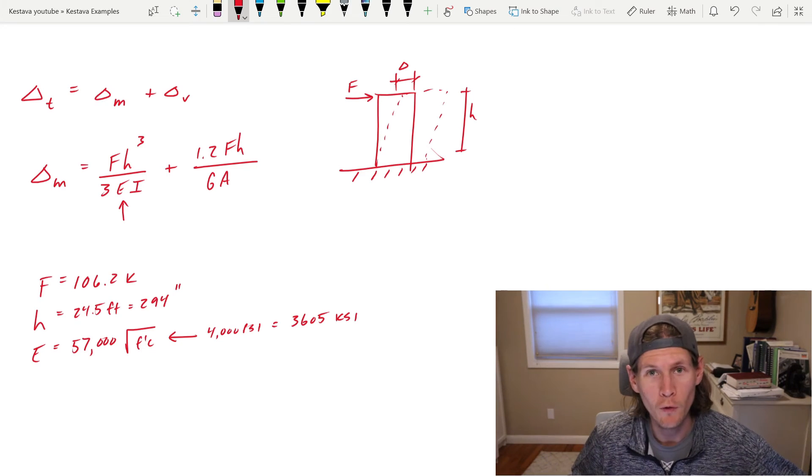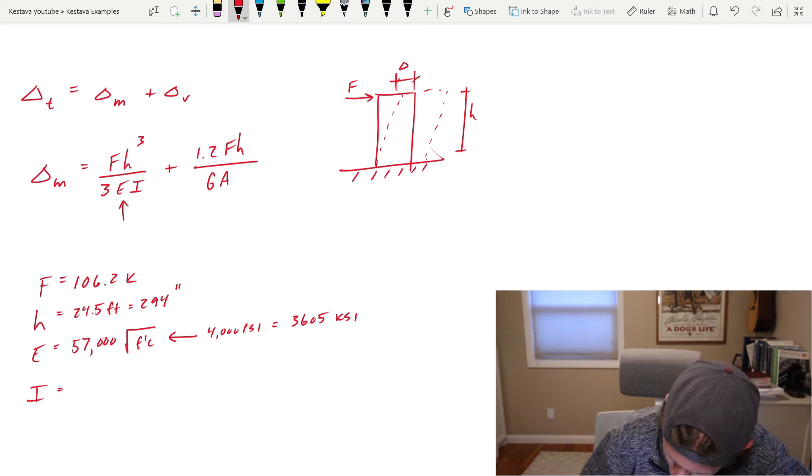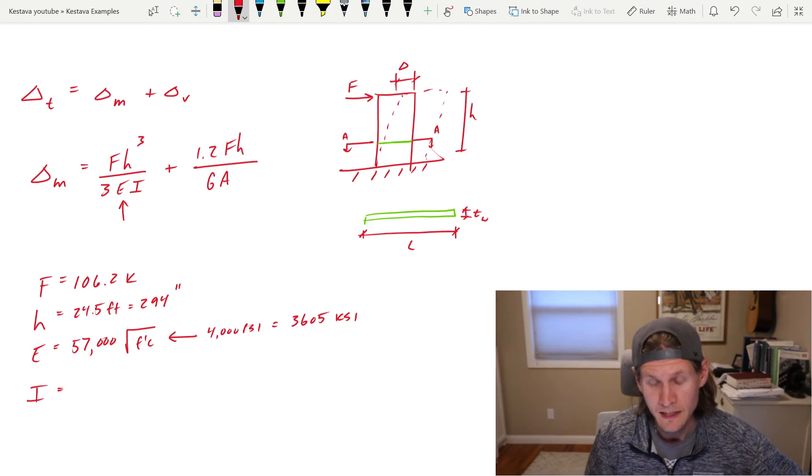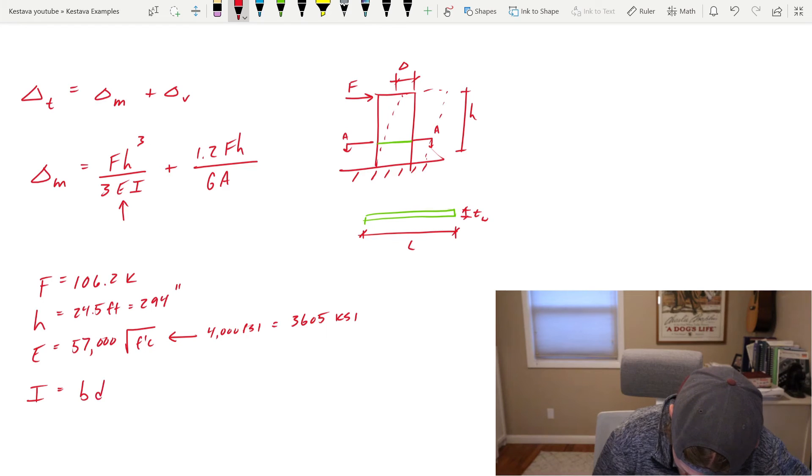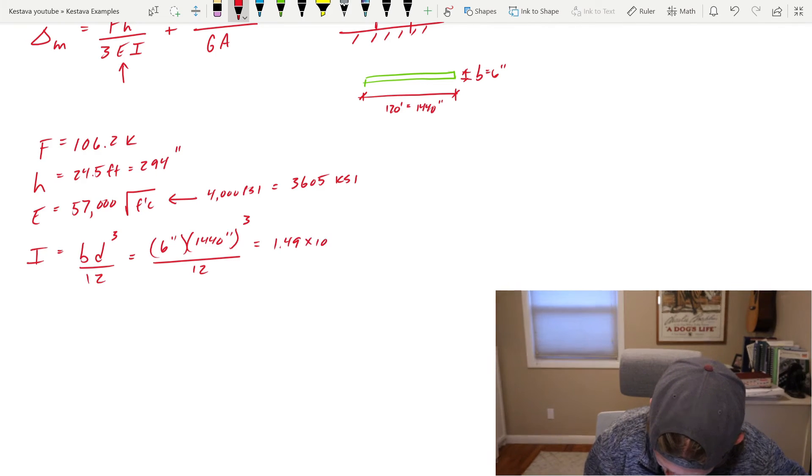And I is going to be, if I take like a section looking down, call it section AA, and I go green, it's going to be that cross section right there looking down in plan. So that green would be the length. So that I would be the length of your total shear wall, L, and the thickness of the wall would be B. So I for the rectangle is B D cubed over 12. And that spits out 1.49 times 10 to the ninth inches to the fourth.